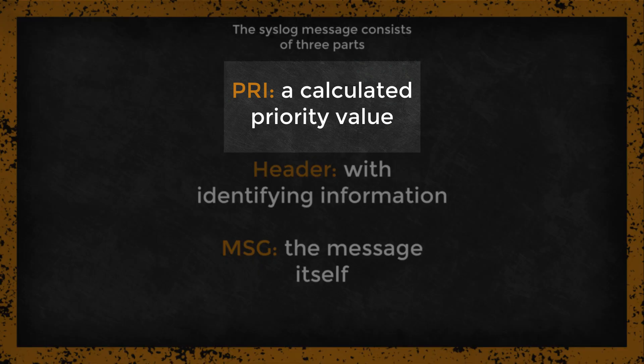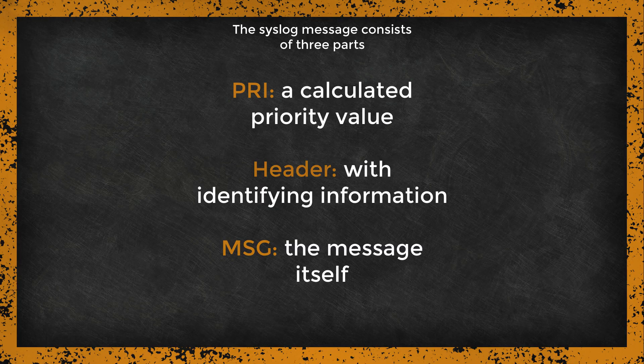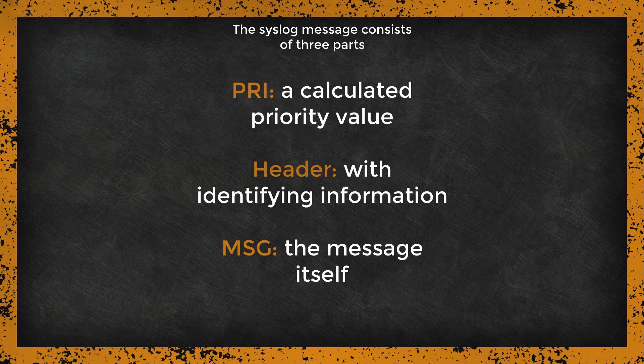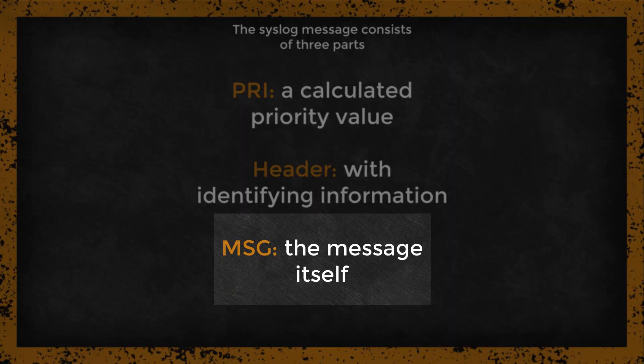The Syslog message consists of three parts: PRI, a calculated priority value; Header, with identifying information; and MSG, the message itself.